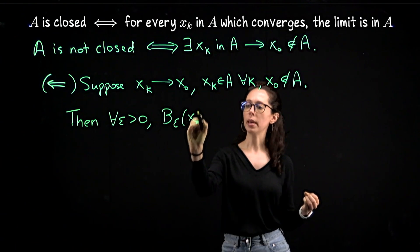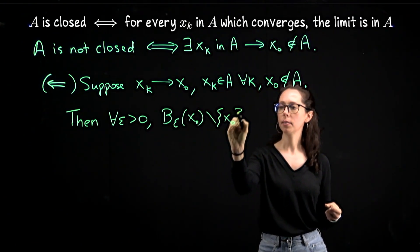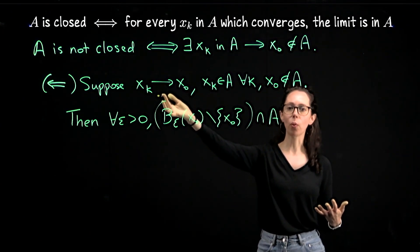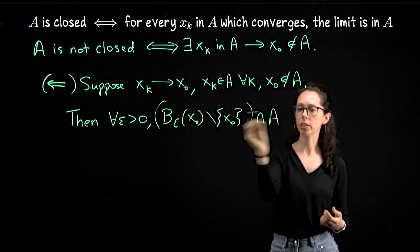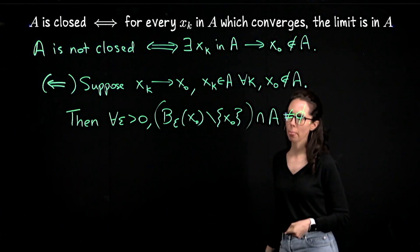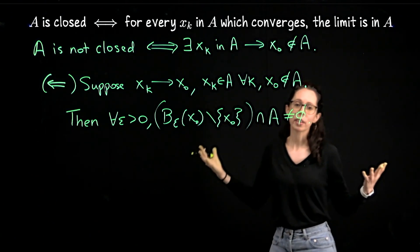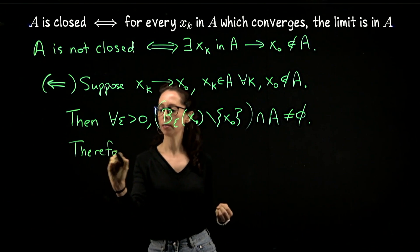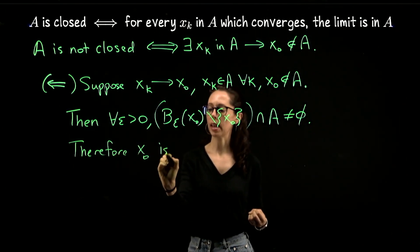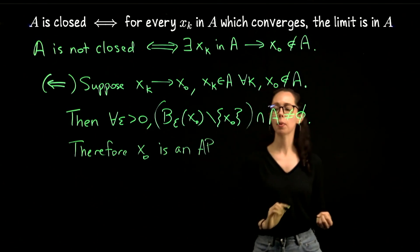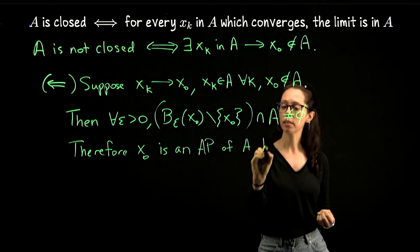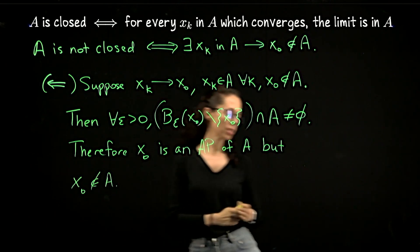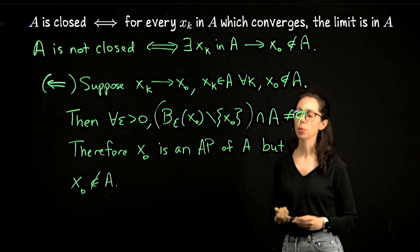Then straight from the idea of sequential convergence for all epsilon greater than zero, the epsilon neighborhood around this limit—I can take the limit out of it, it's not even in A—intersect A is non-empty because it's got to have sequence points. That was in our study of what it meant to say a sequence converged. So this is a non-empty intersection. But now literally the limit x₀ here is an accumulation point of A not in A. So therefore x₀ is an AP, an accumulation point or a limit point of A, but we're assuming it's not even in A. As we found an accumulation point of A in A complement, A is not closed.